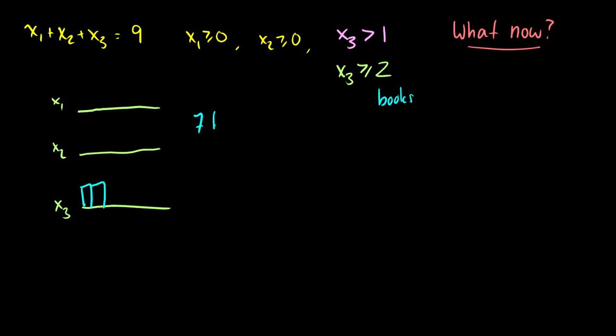So what do we have left? Well, we now have seven books left to distribute between these three shelves. So really, this problem right here is actually just x1 plus x2 plus x3 is equal to seven, where all of our x's are greater than zero, greater or equal to zero, which we know is just the same thing as nine, two, seven from the previous example.